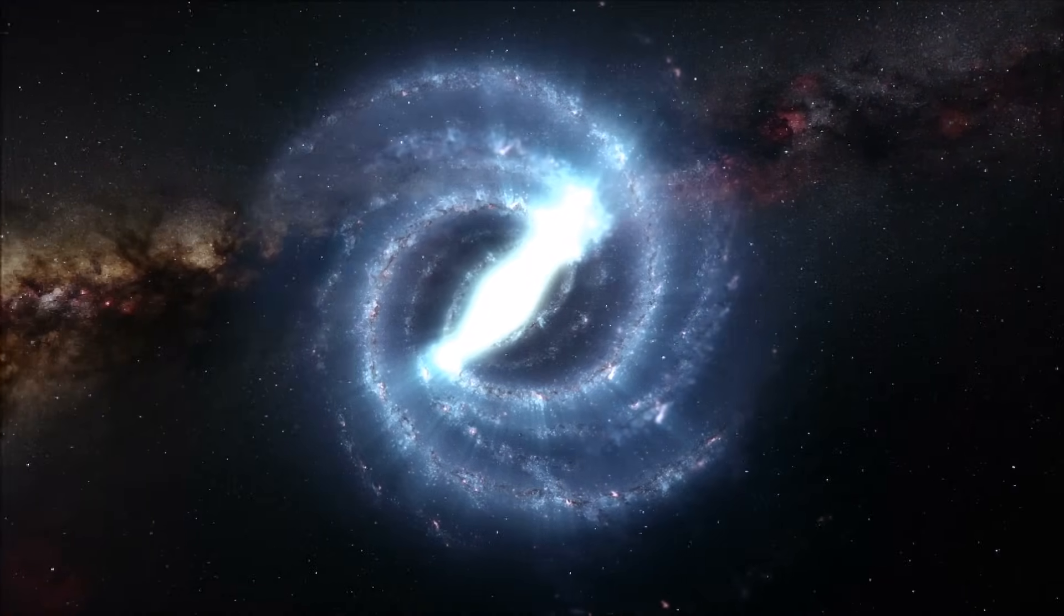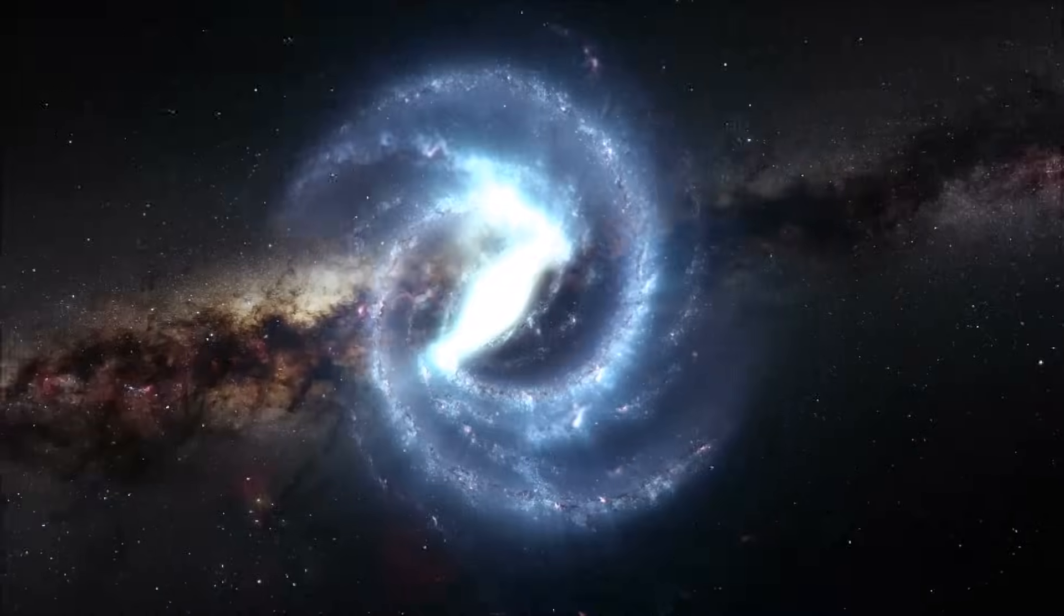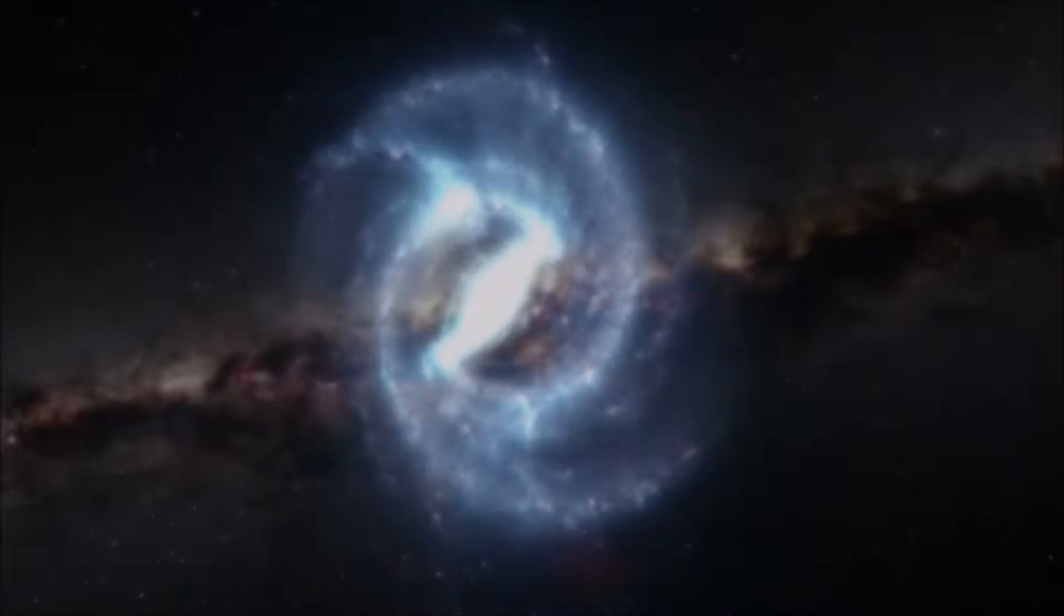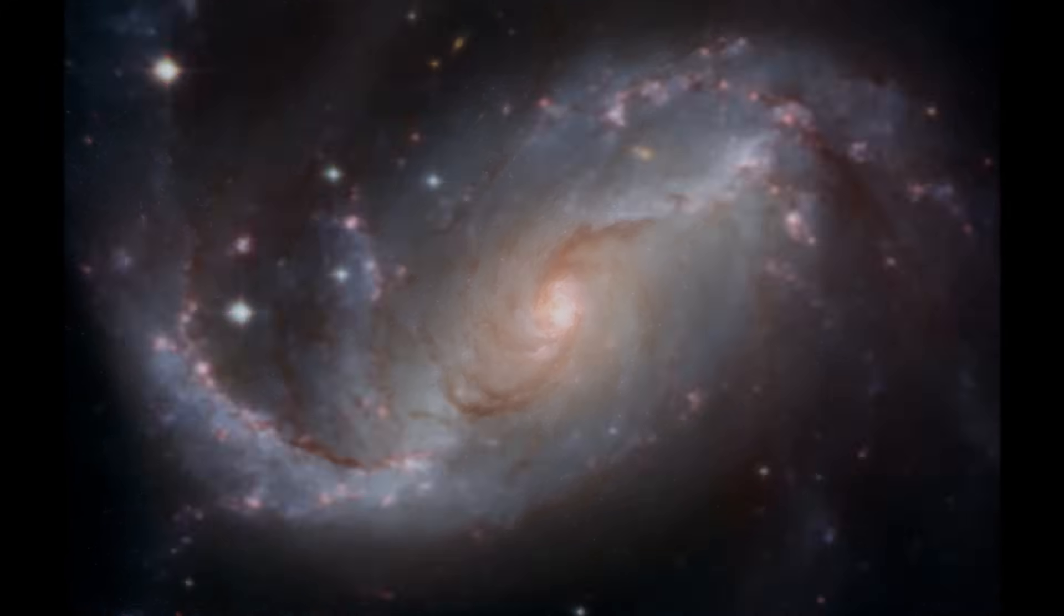Galaxies come in many different shapes and sizes. They may have only a few million stars in them, or over a trillion. They may be elliptical, spiral, or irregular in shape.